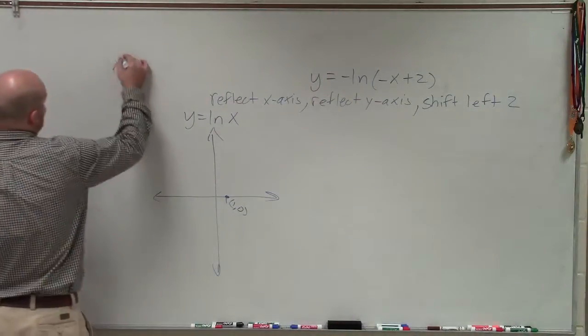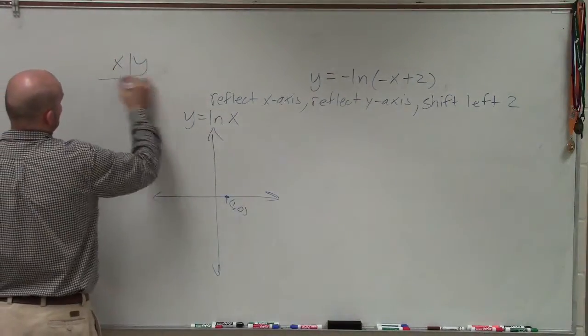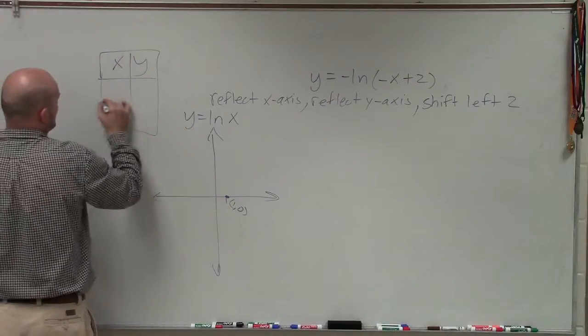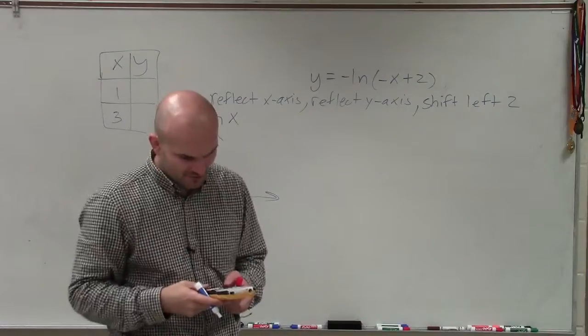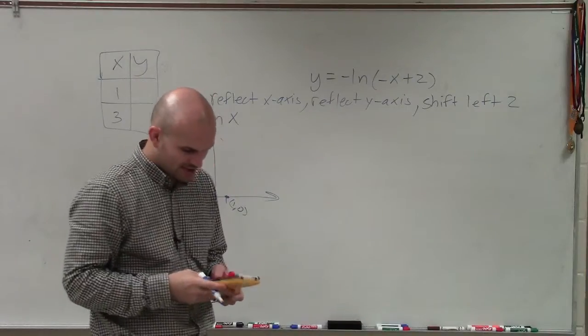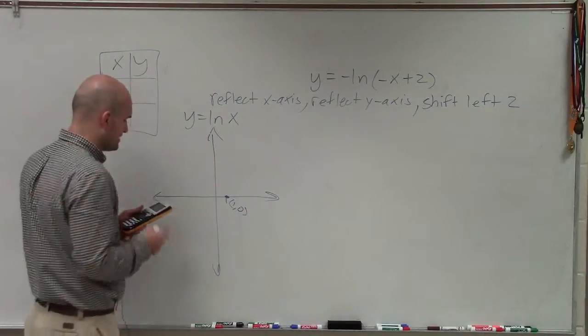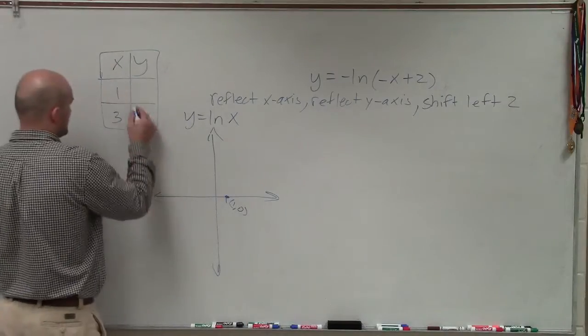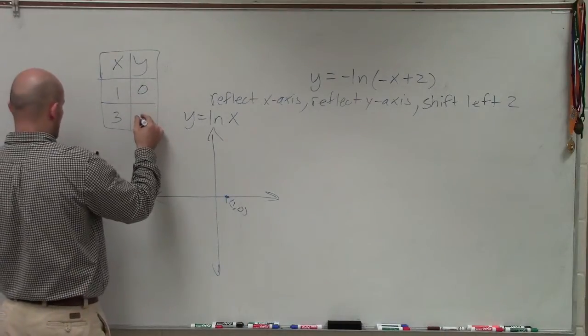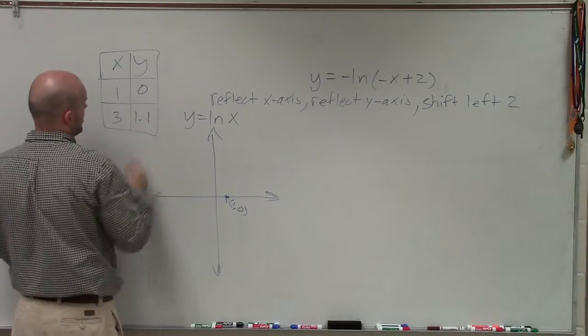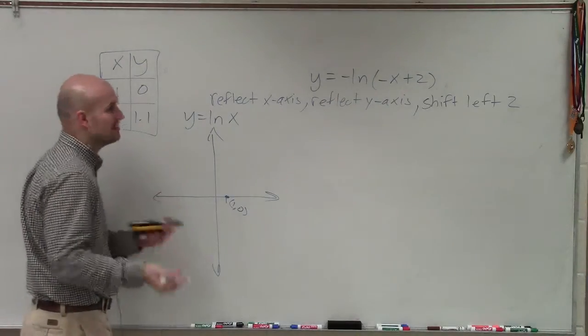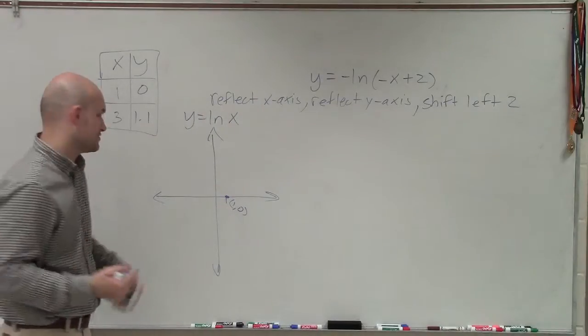Then you can choose another point. Remember, we're just choosing an xy table. So in doing an xy table for this, you can just pick whatever points you want. And let's just pick 3. So if I did the ln of 3, I'll just plug that in my calculator. ln of 3 is 1.98. So I'm just going to leave that as 0. And then 3 would be 1.1. And again, this is an approximation, because e is an irrational number.